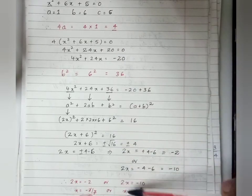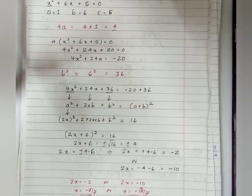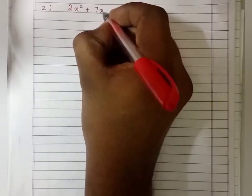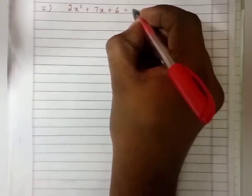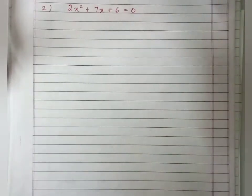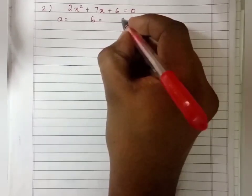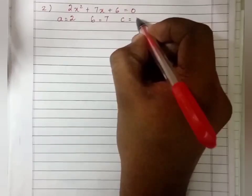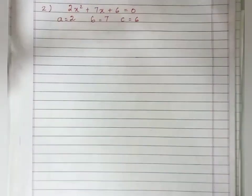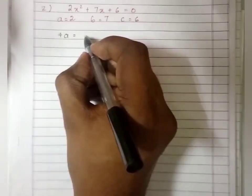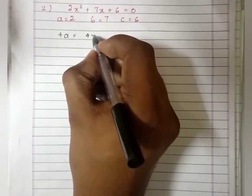The first step is to find the value of 4a, then multiply the equation. For the second question, 2x² + 7x + 6 = 0. The first step is finding out the coefficients: a = 2, b = 7, and c = 6.